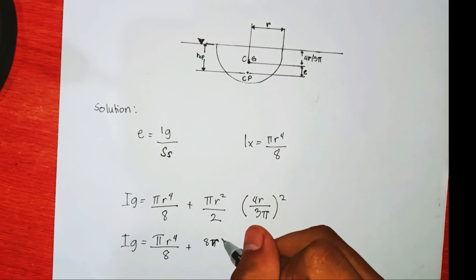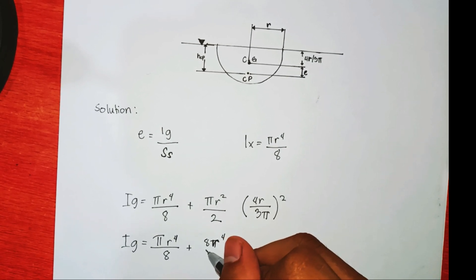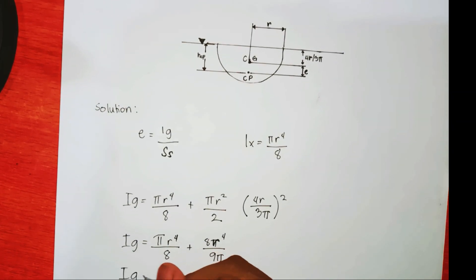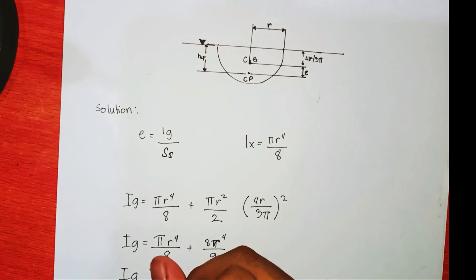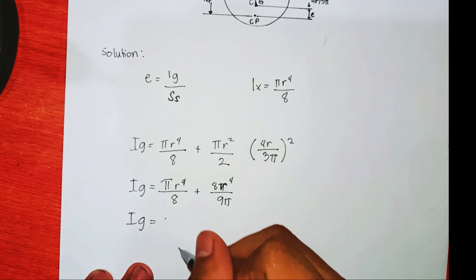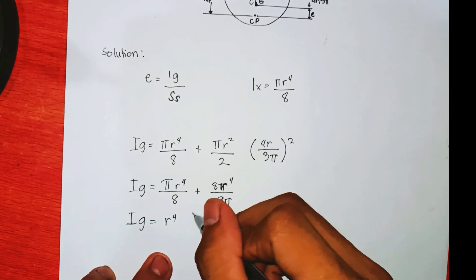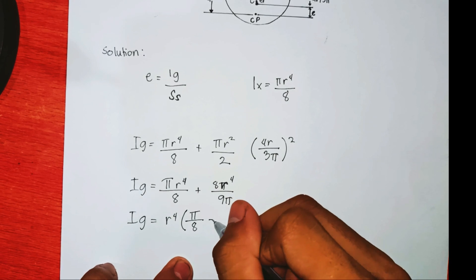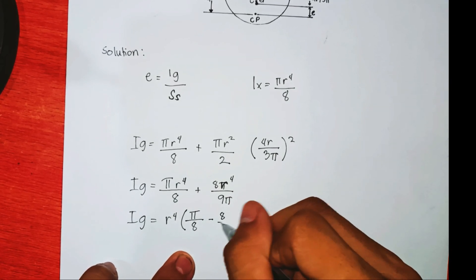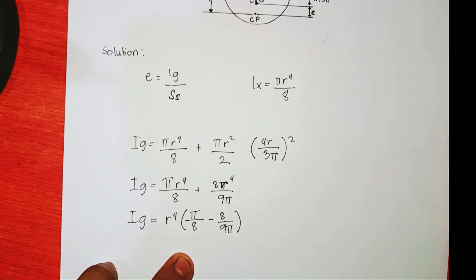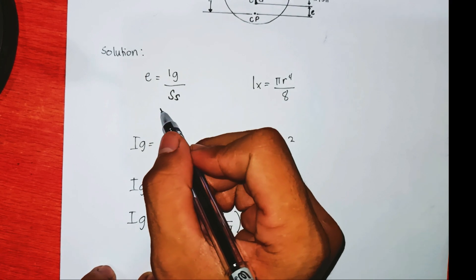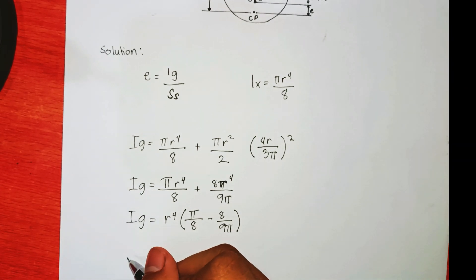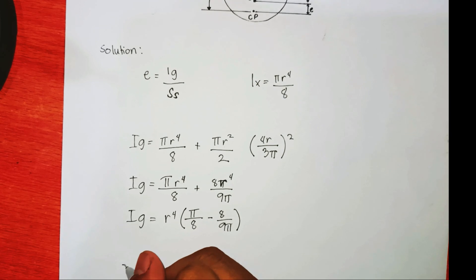Factor out r raised to 4: r raised to 4 times pi over 8 minus 8 over 9 pi. Plug into the original equation, which is r raised to 4 times pi over 9 pi where r raised to 4 is equal to r raised to 4 plus pi over 8.